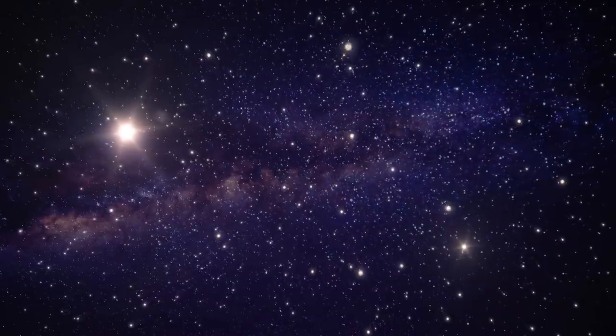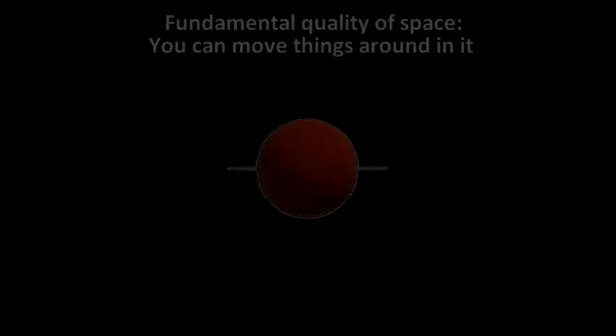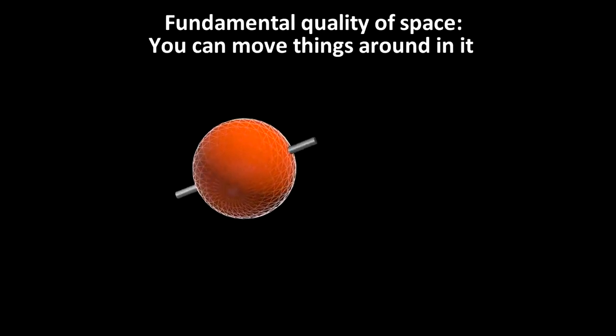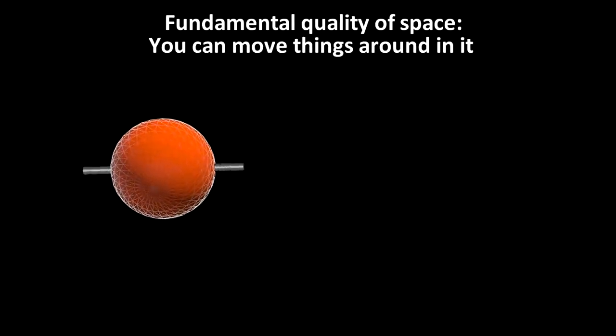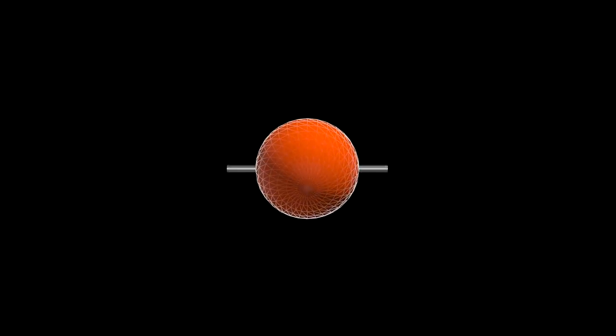What is a fundamental quality of space? Well, one thing is that you can move things around in space. So the starting point of quantum holonomy theory is the mathematics of moving stuff around. And again, the stuff itself doesn't matter here. It's simply the action of moving stuff around. How can we describe the action of moving an arbitrary object from any point A to any point B?